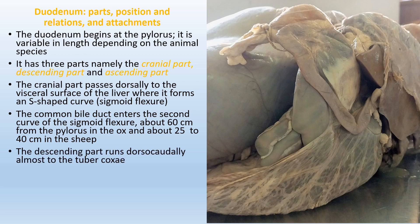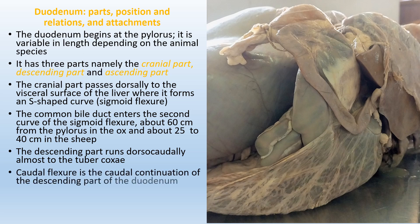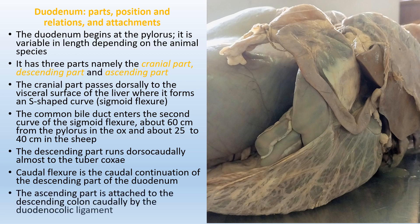The descending part of the duodenum runs dorso-caudally, almost reaching the tuber coxae. The caudal flexure is the continuation of the descending part before it connects into the ascending part of the duodenum. The ascending part of the duodenum is attached to the descending colon, caudally, by the duodenocolic ligament.